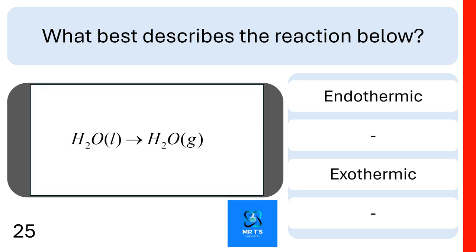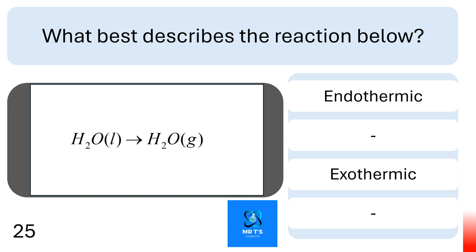Question twenty-five: what best describes the reaction of liquid water turning into water gas? Is it endothermic or exothermic? This is endothermic because bond breaking — breaking the bonds between water molecules — is endothermic.